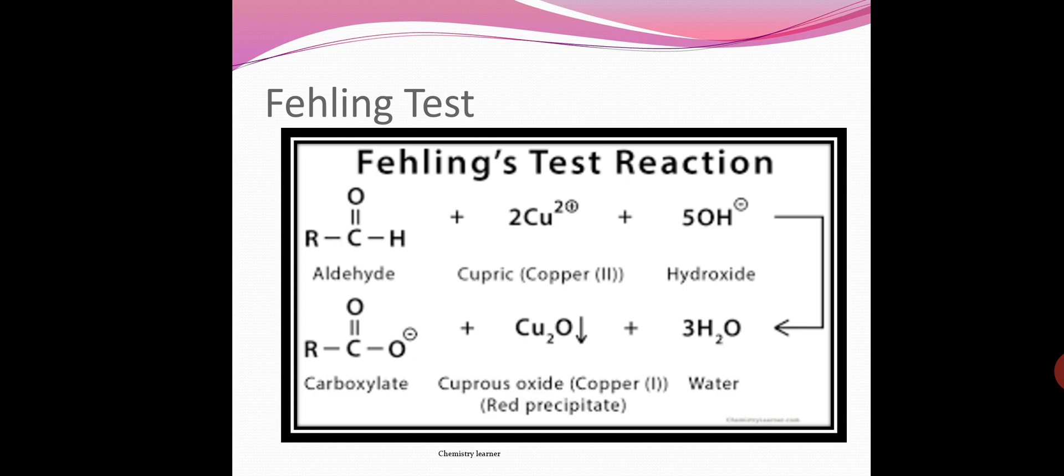Third test is Fehling test. Fehling solution is a mixture of Fehling A and Fehling B solution. Fehling A solution is copper sulfate and sulfuric acid, and Fehling B is sodium potassium tartrate in sodium hydroxide solution. When aldehyde is added to Fehling solution, aldehyde is oxidized to carboxylate ion and Cu2+ is converted to Cu2O, red precipitate cuprous oxide.